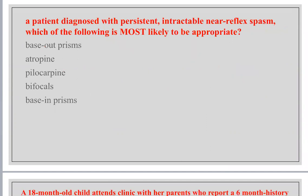A patient diagnosed with persistent intractable near-reflex spasm: which treatment is appropriate? Near-reflex spasm is treated by atropine — this is logical.